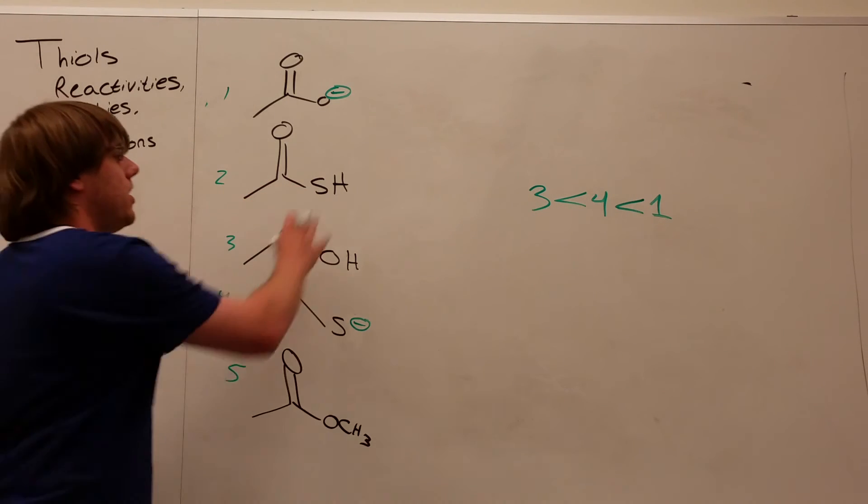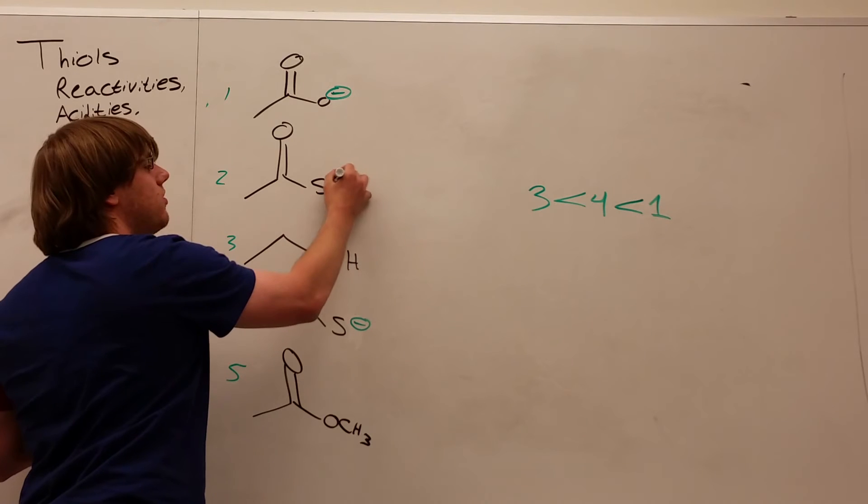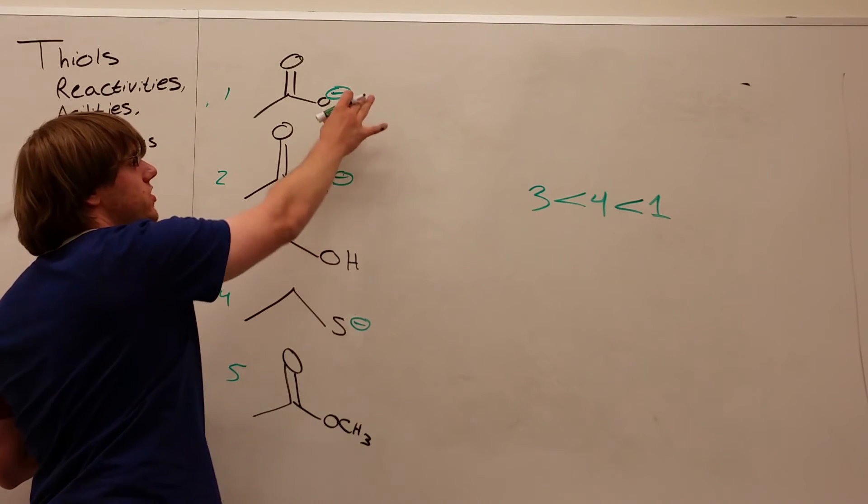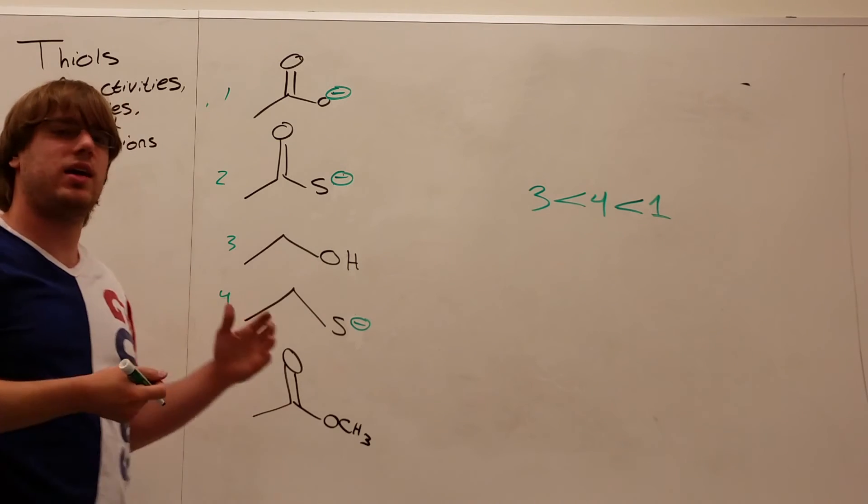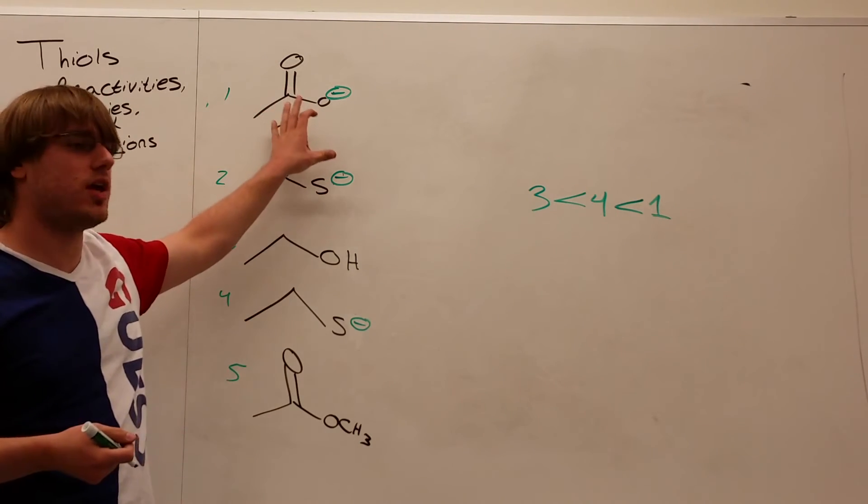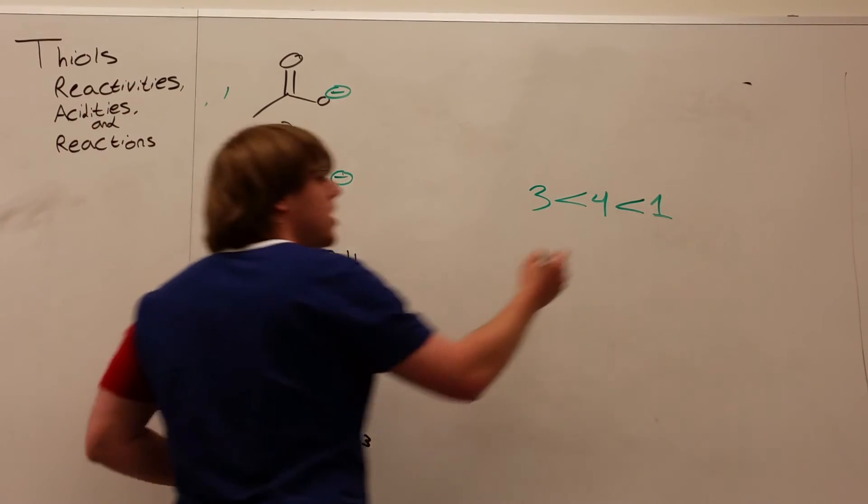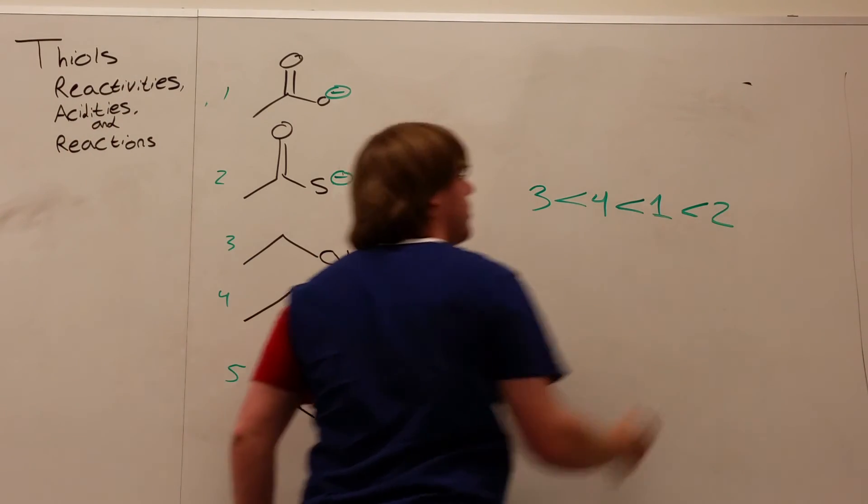And then if I'm comparing this S- to that O-, well, now it's a sulfur with resonance versus an oxygen with resonance. And in that case, since the resonance conditions are the same, it's again back to sulfur is larger than oxygen and can better stabilize that negative charge. And so you have 2 being greater than 1.